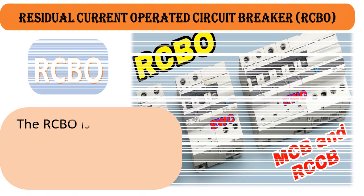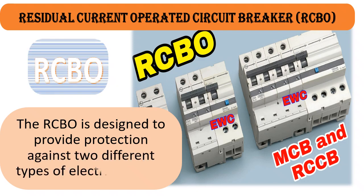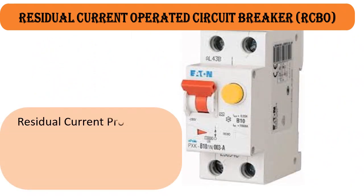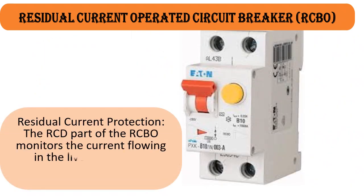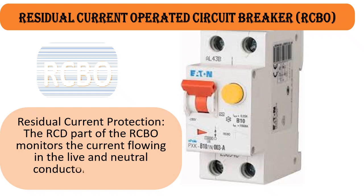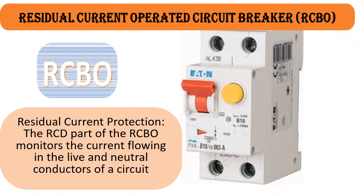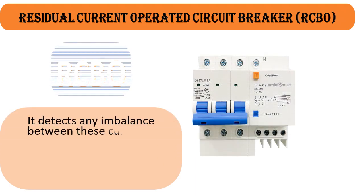The RCBO is designed to provide protection against two different types of electrical faults. One: Residual Current Protection — the RCD part of the RCBO monitors the current flowing in the live and neutral conductors of a circuit. It detects any imbalance between these currents.